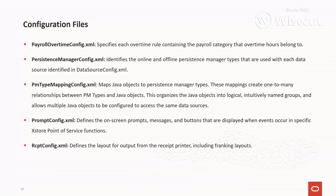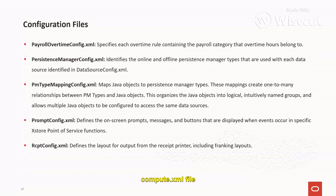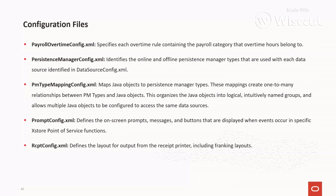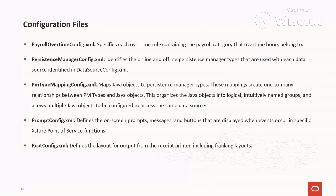The persistent_manager_config.xml file uses the data sources defined in data_source_config.xml. For example, when scanning an item, the system can be configured to first look up the local system, then the store primary database, then the Accenter database, and if not found anywhere, display an item-not-on-file message. That lookup hierarchy is configured here.